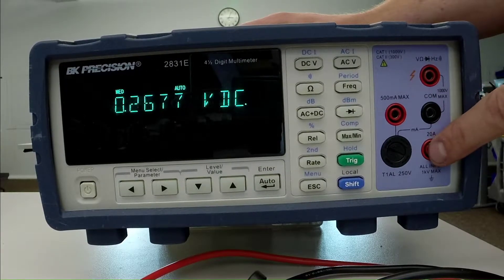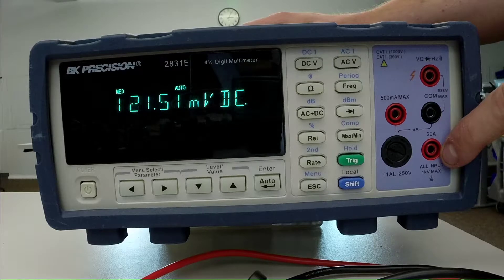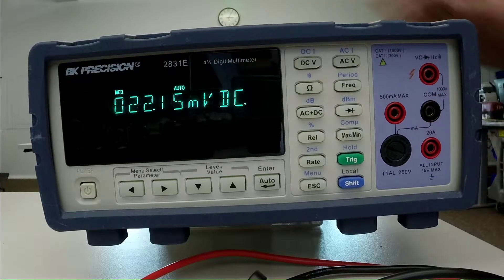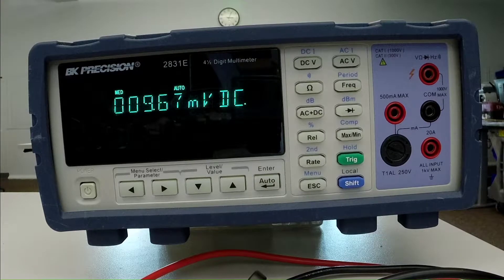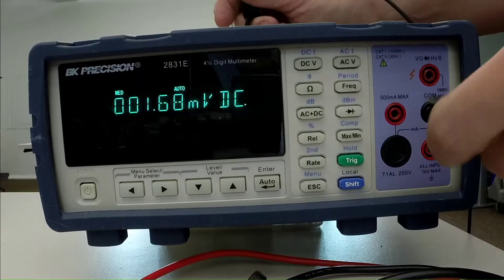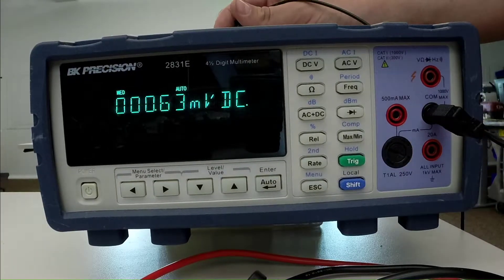So over here we have a few different connectors where we can put test leads in, depending on what type of measurement that we're using. So we always have to connect a wire to the common input, which is kind of your negative terminal. So plug that in there.